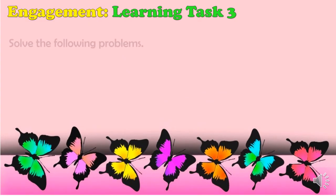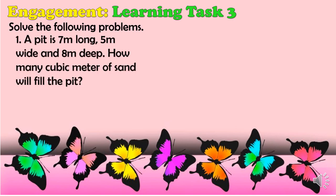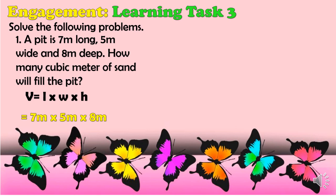For the Engagement Learning Task 3, solve the following problems. Problem 1: A pit is 7 meters long, 5 meters wide, and 8 meters deep. How many cubic meters of sand will fill the pit? Using V = L × W × H, substituting: 7 m × 5 m × 8 m. Multiplying 7 × 5 × 8 gives a volume of 280 cubic meters.